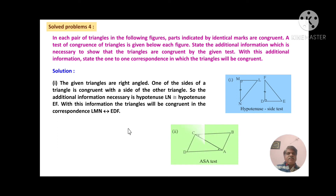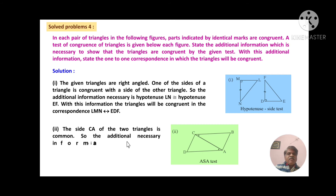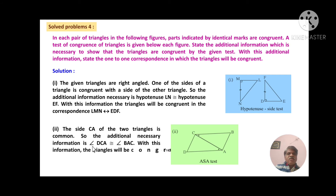For the second figure, side CA is common to both triangles. The additional information necessary is that angle DCA is congruent with angle BAC. With this information, the triangles are congruent in the correspondence DCA to BAC.